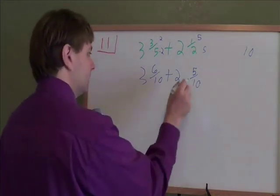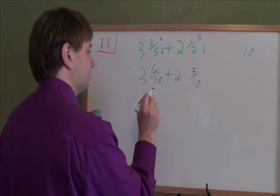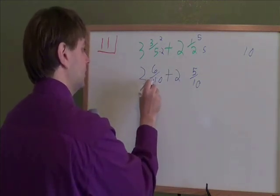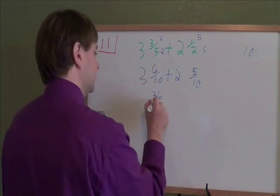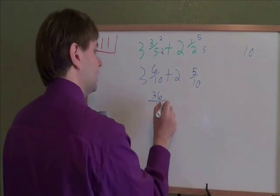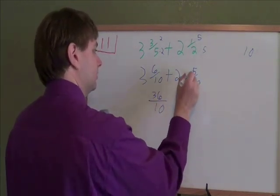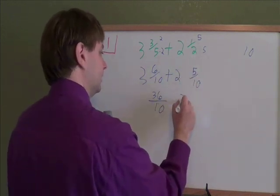And then, before we can add these together, we want to turn them from the mixed numbers into improper fractions. So to do that, multiply the number in front times the denominator. 3 times 10 is 30. Add that 6, you get 36. Still over 10. Same process here. Number in front times the denominator plus the numerator. 2 times 10 is 20, plus that 5 is 25.